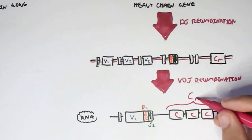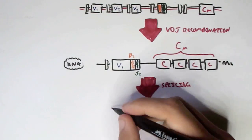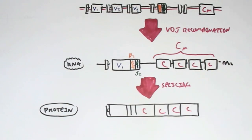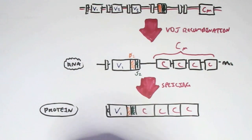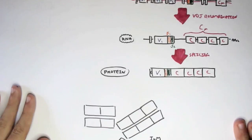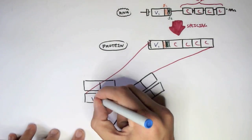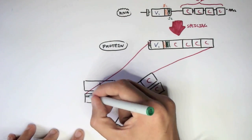In this example, the segments bind to variable segment 1, diversity segment 2, and joining segment 2. The constant mu region consists of 4 constant regions. This is already an RNA that must go through splicing to remove introns, producing an mRNA and then a protein — the heavy chain of the immunoglobulin, consisting of V1, D2, J2, and 4 constant regions, fitting into an IgM antibody.